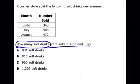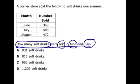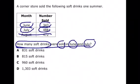We want to know how many soft drinks were sold in June and July. So if we come up here and look, we can see our chart tells us the month and the number sold, and we know we want June and we want July.